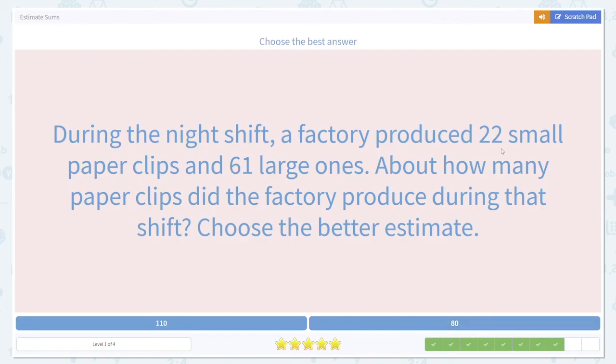During the night shift, a factory produced 22 small paperclips and 61 large ones. About how many paperclips did the factory produce during that shift.